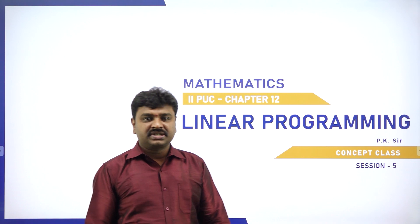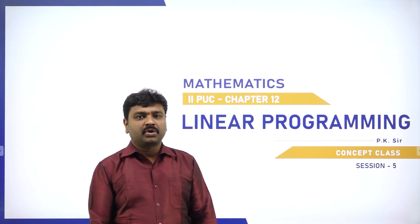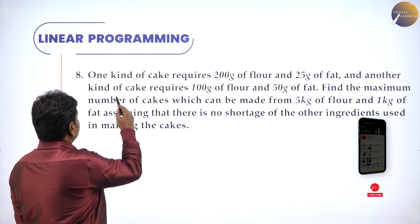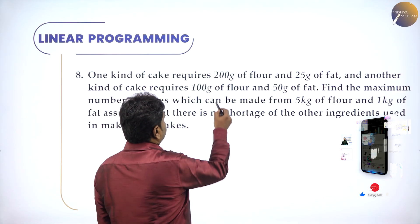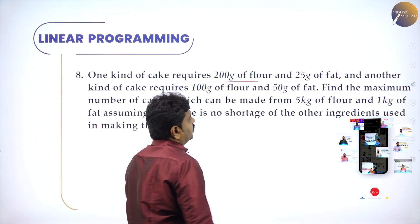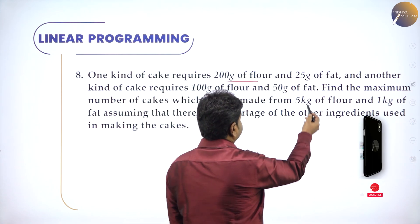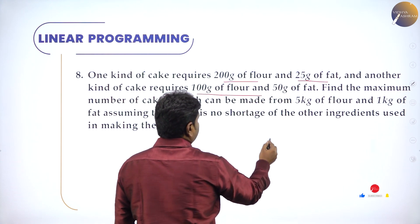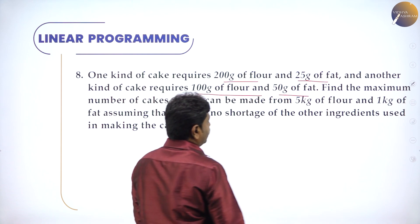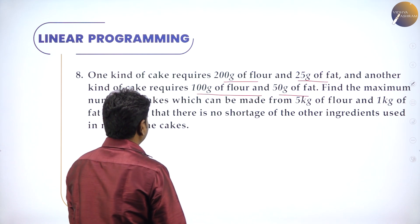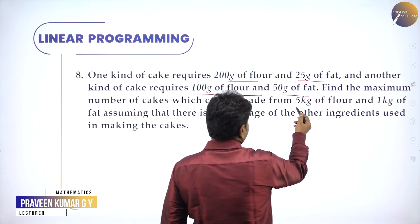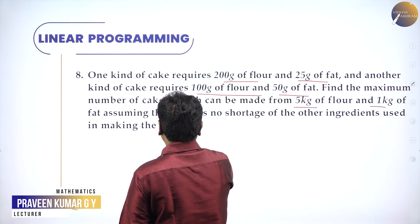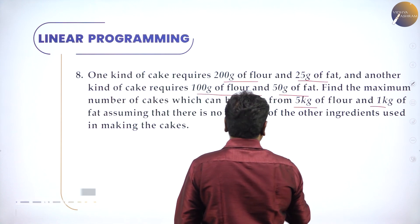Welcome to the session, dear students. Today we will go ahead with the problems of linear programming. So now: 1 kg of cake requires 200 grams of flour and 25 grams of fat, and another kind of cake requires 100 grams of flour and 50 grams of fat. Find the maximum number of cakes which can be made from 5 kg of flour and 1 kg of fat, assuming that there is no shortage of ingredients.